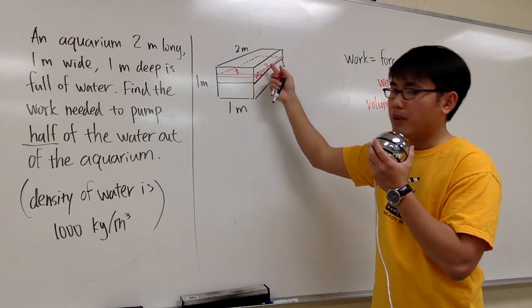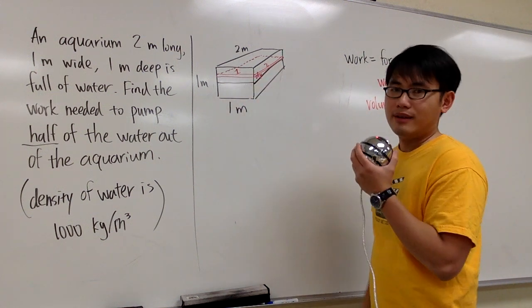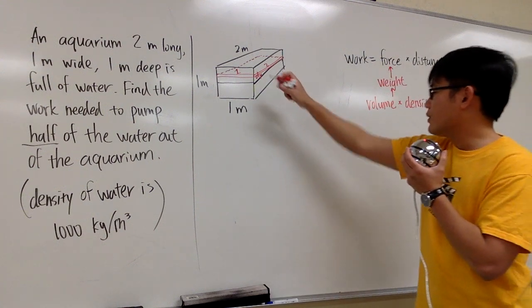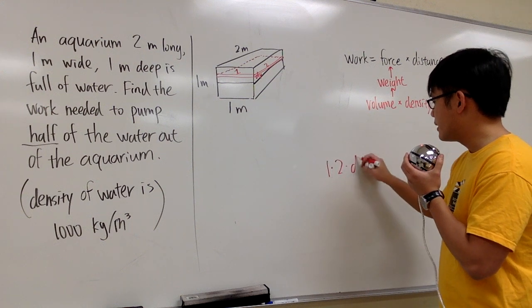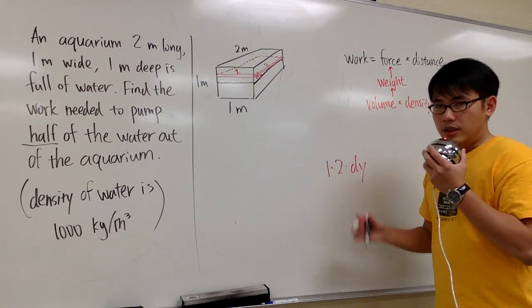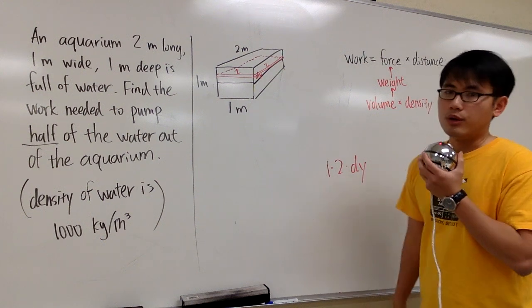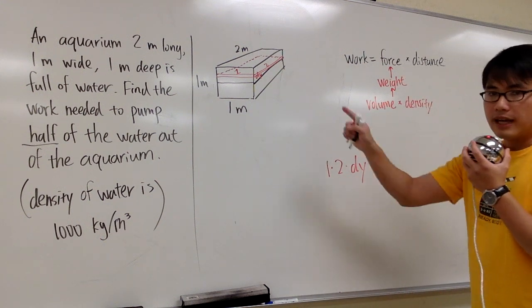Now we are ready to write an expression for its volume. A volume for this rectangular box is just 1 times 2 times dy. Length times width times height. I will just put this down for the volume 1 times 2 times dy. And then I will build down my integral. I'm using dy, and then I'll put the dy all the way at the end.